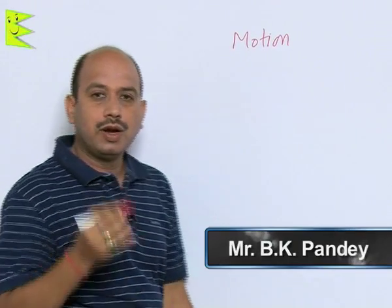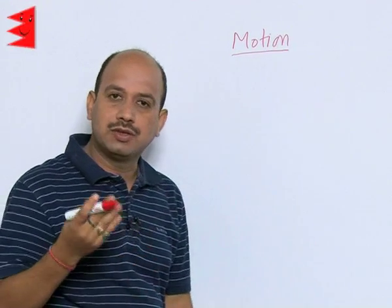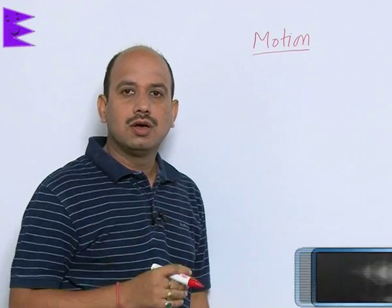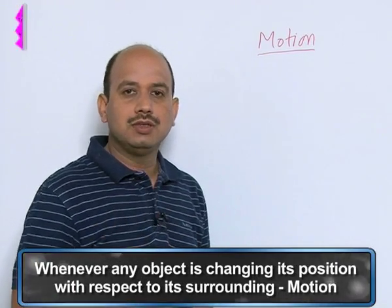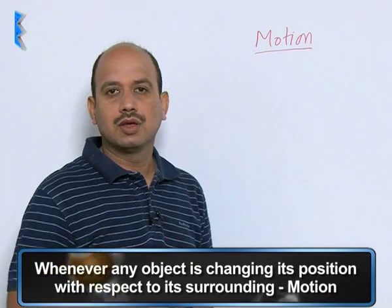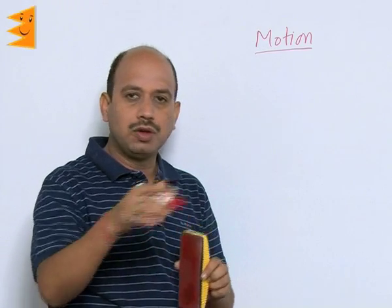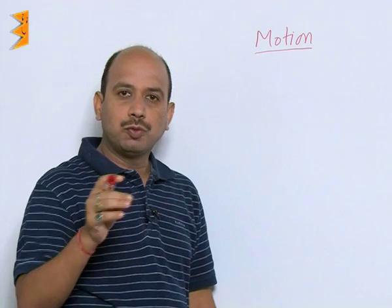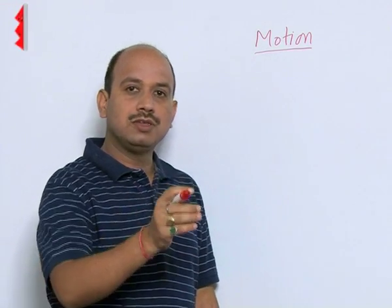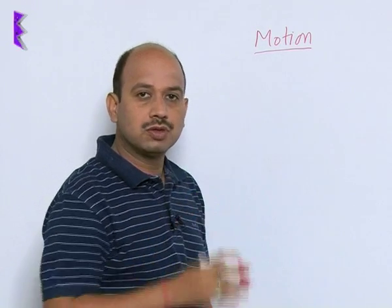What is motion? When do you say any object is in motion, and when do you say any object is at rest? Whenever any object is changing its position with respect to its surroundings — suppose you are standing at a point and one person is moving around you. You measure their position over time and find that person is at different positions at different times, so you can say that person is in motion with respect to you.